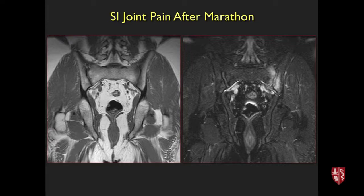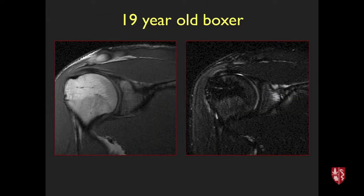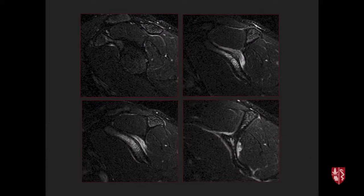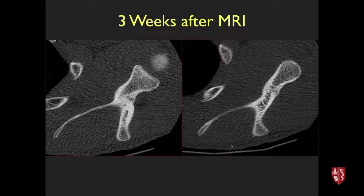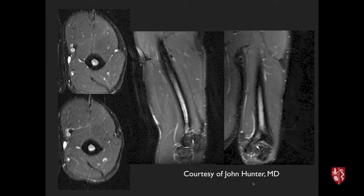Upper extremity stress injuries are much less common. A competitive boxer with shoulder pain and otherwise normal-looking shoulder had edema in the scapular neck. MRI showed marrow edema and periosteal reaction in the scapular neck region. CT scan a few weeks later confirmed cortical thickening and a low-attenuation fracture line — a stress fracture of the scapula from repetitive punching impact.